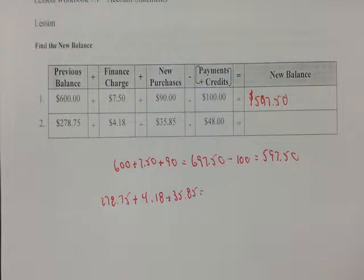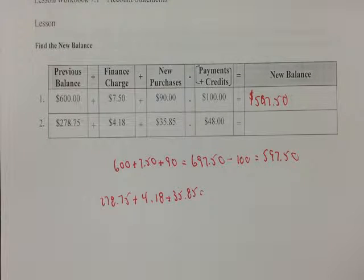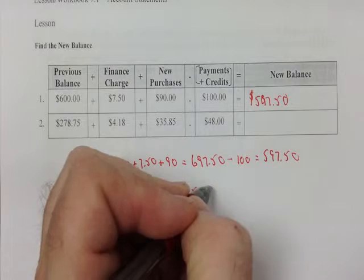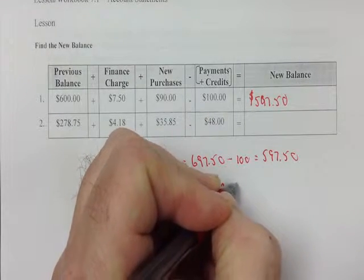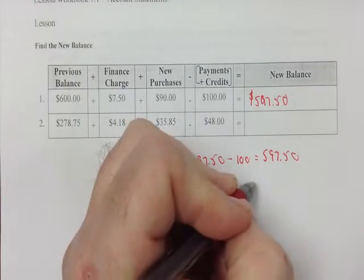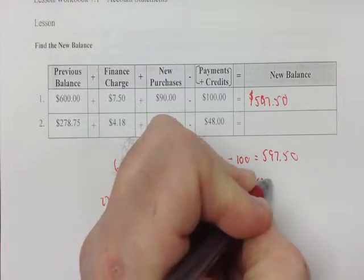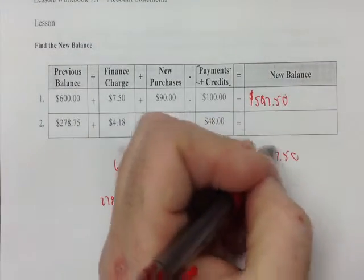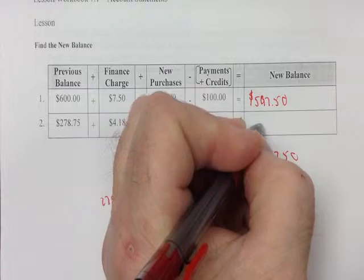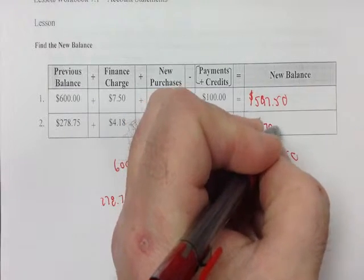So you're going to add all this stuff together: $278.75 plus $4.18 plus $35.85 equals $318.78. You subtract the $48.00 payment, and your new balance is $270.78.